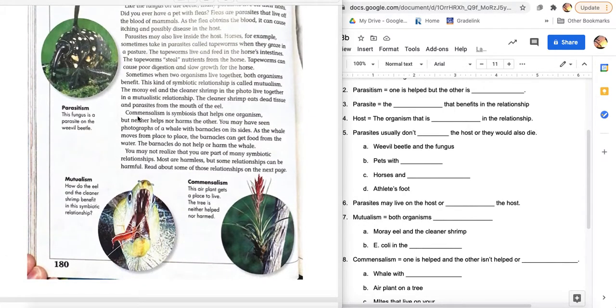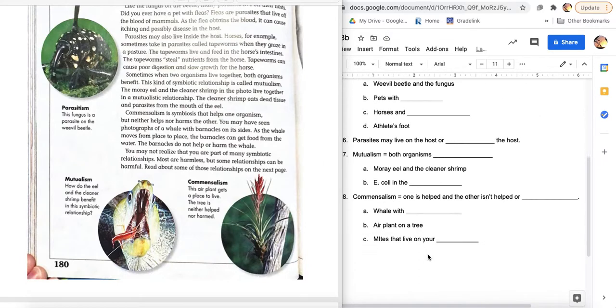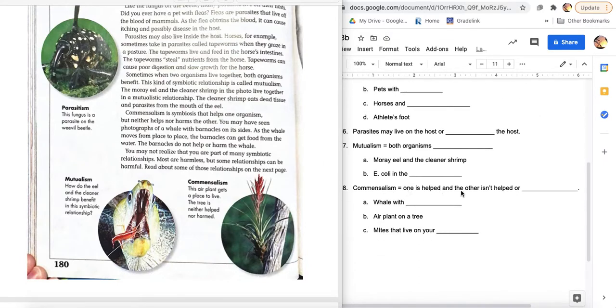Third type of relationship. Commensalism is symbiosis that helps one organism, but neither helps nor harms the other. So you're down here at number eight. One is helped, but the other isn't helped or harmed. So the other one kind of cares less. One's getting a benefit. The other one don't care.